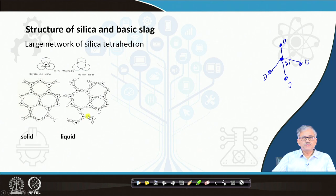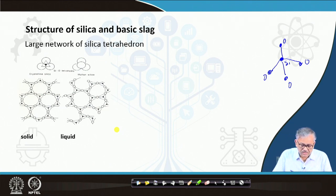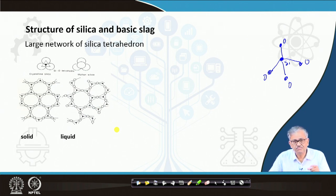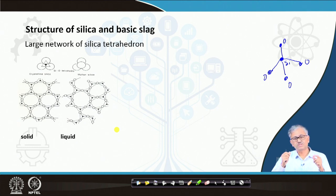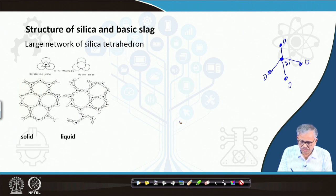The liquid structure is also a large network. If you add a basic oxide - for example, if you add lime - it basically depolymerizes some of the bonds. How does this happen? Basically, suppose you have two silicon atoms connected through a bridging oxygen.